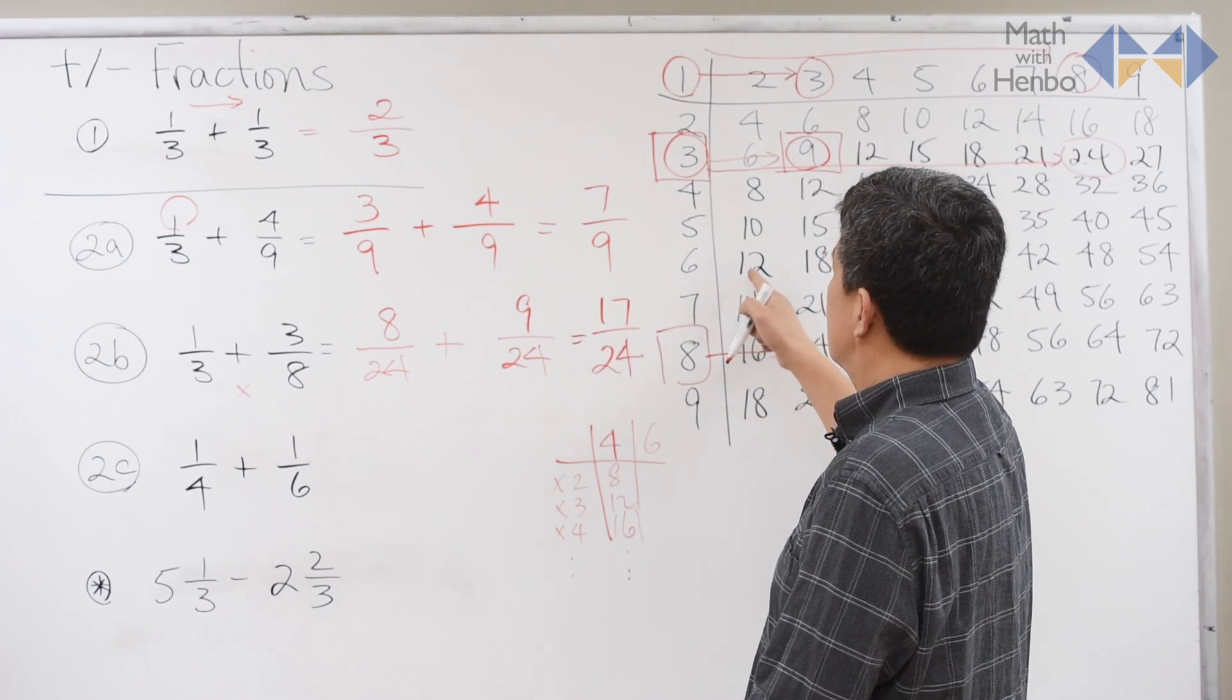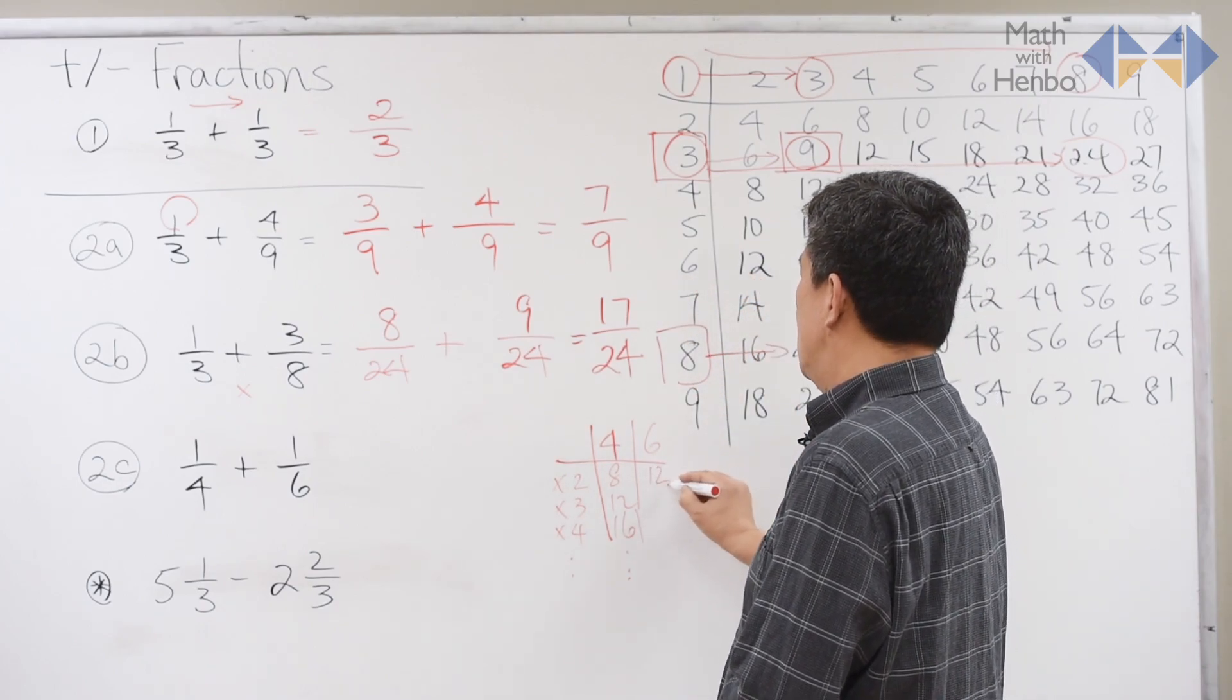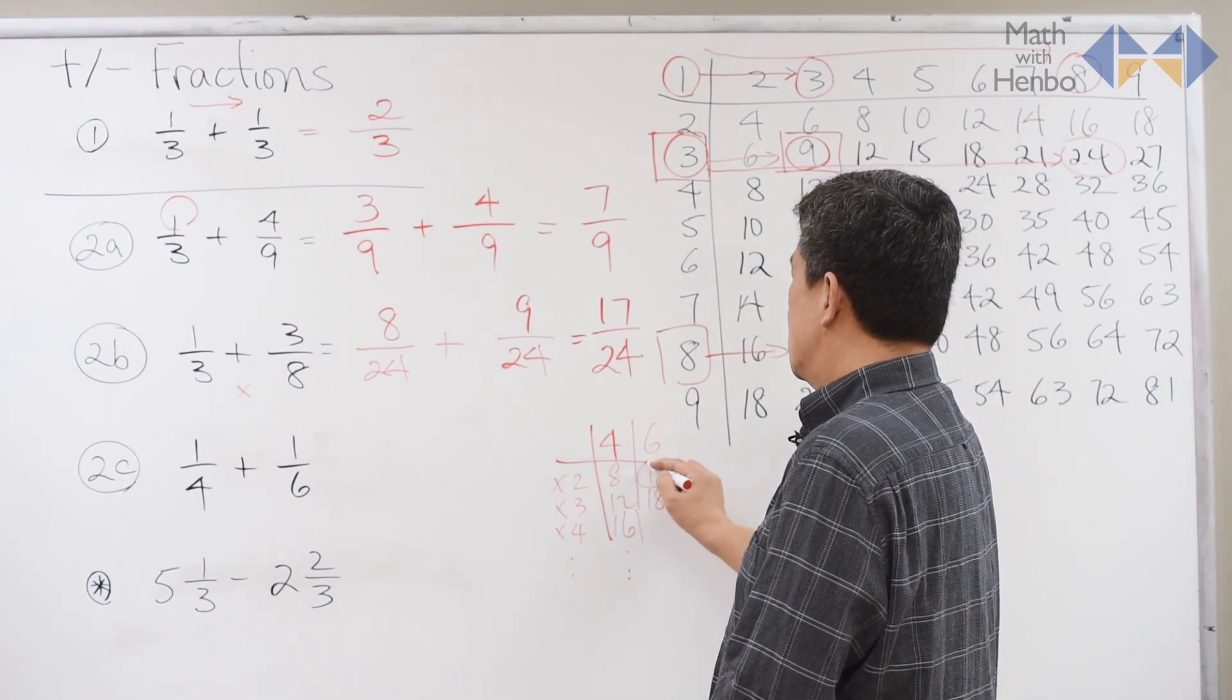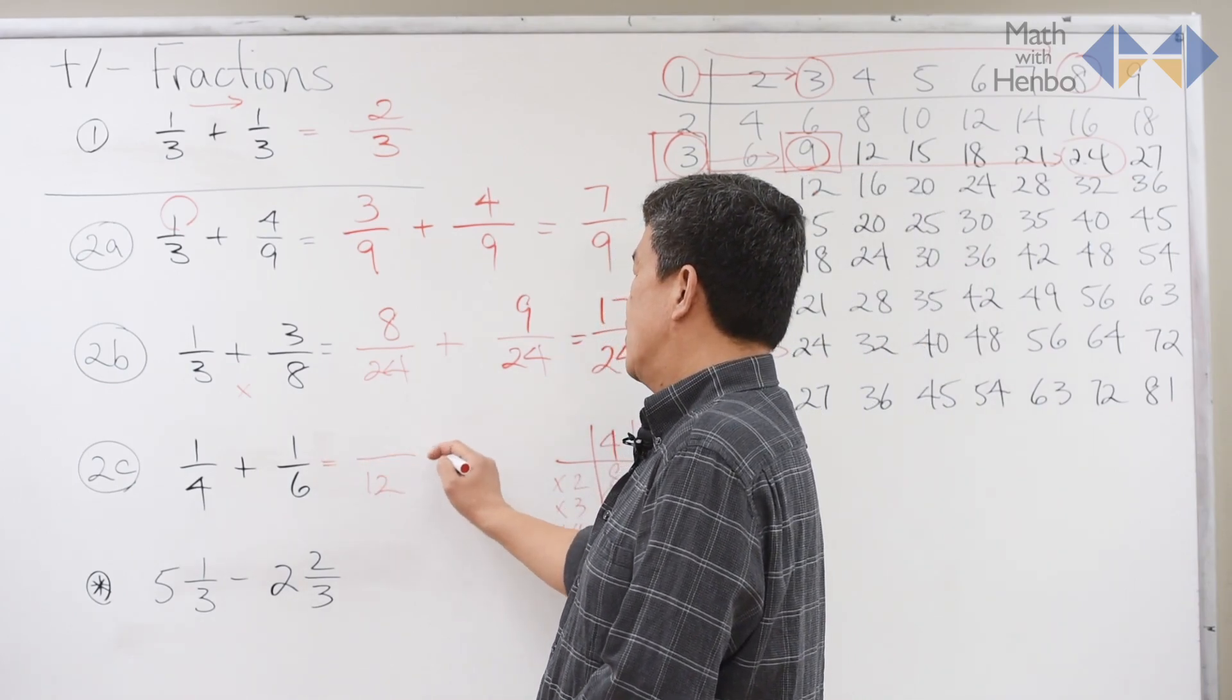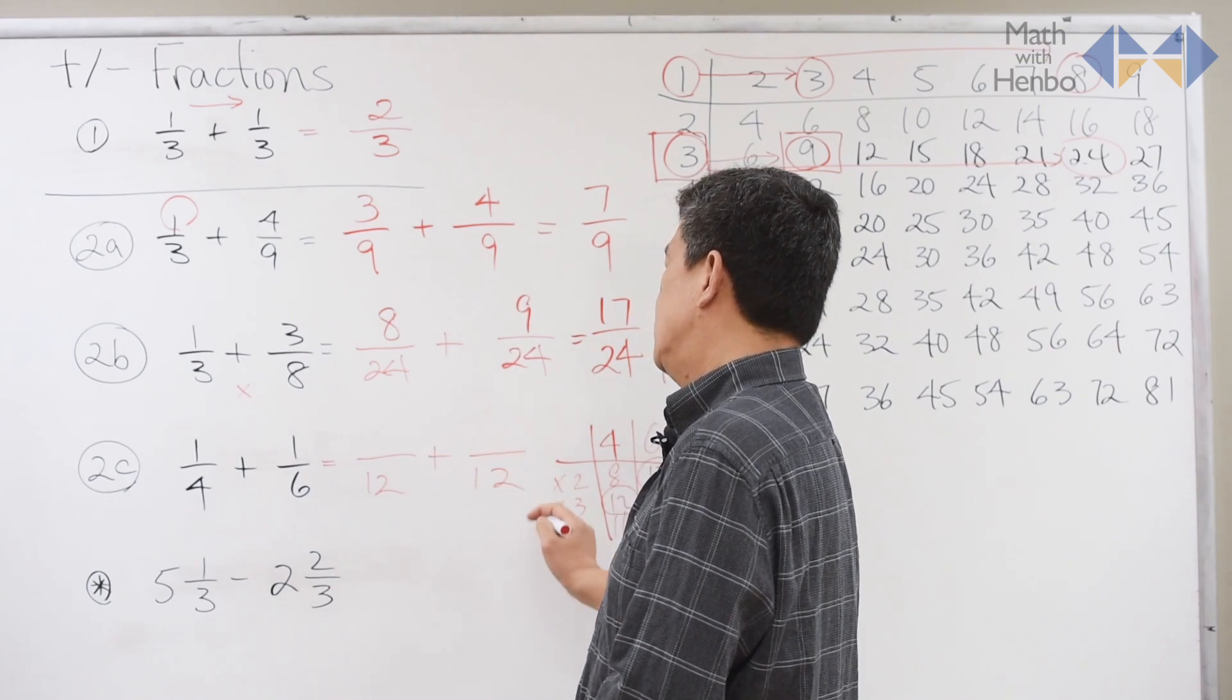What about the 6? Well, 6 gives us 12 and 18. So here I got 12, 18, but wait. I already have 12s here. So all I need to do is now change everything to where they met, which is a 12.